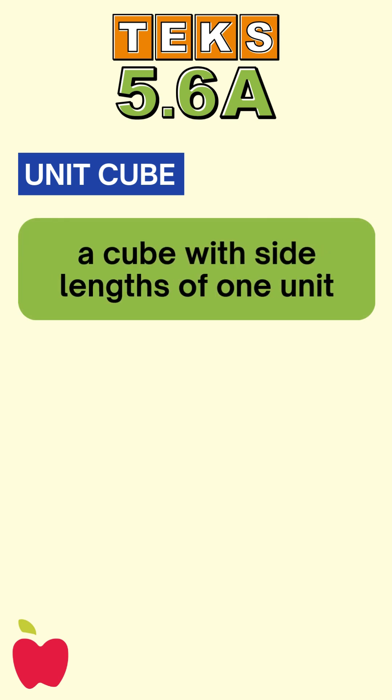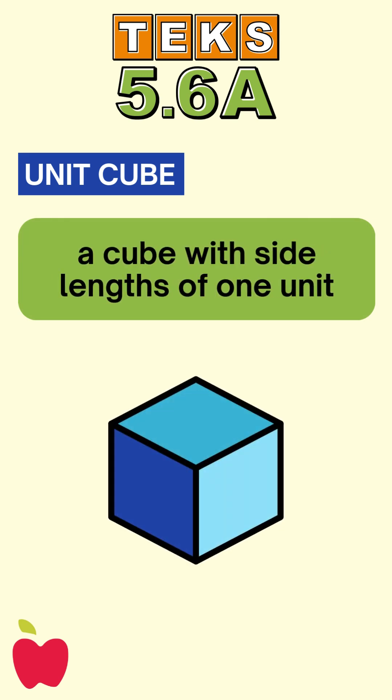A unit cube is a cube with side lengths of one unit. That means it's one unit tall, one unit wide, and one unit deep. It takes up exactly one cubic unit of space.